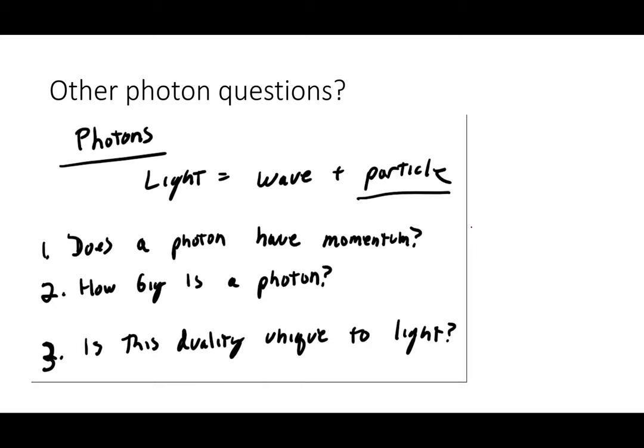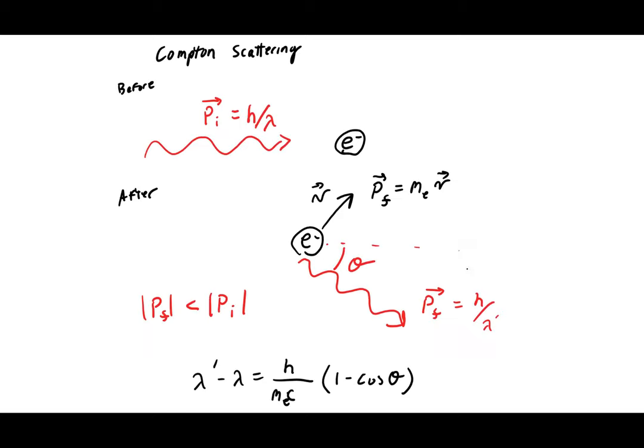The photoelectric effect and the photon model raise further questions. If light is a particle, does it have momentum? How big is a photon? And if light behaves like both a wave and a particle, what's so special about light — can other particles, like electrons, also behave like waves?